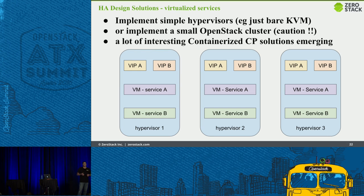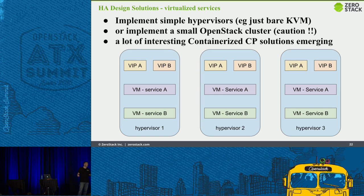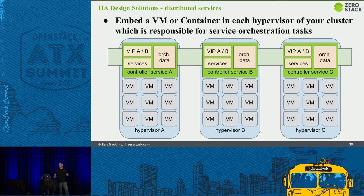There are a couple of ways to physically architect your services. Bare metal is easy — throw some Ansible playbooks, SaltStack states, or Chef recipes at it. But virtualization gives us a lot of flexibility. You might put your control plane on multiple hypervisors, orchestrating services as individual or shared VMs. Using something like bare KVM across three hypervisors is not a bad way — there's not much that can go wrong, and simplicity is a very good tenant to follow.